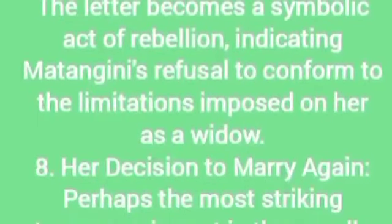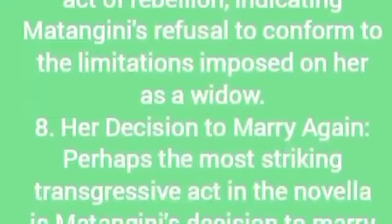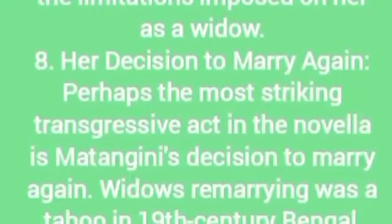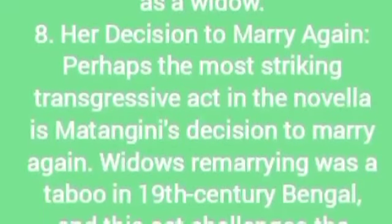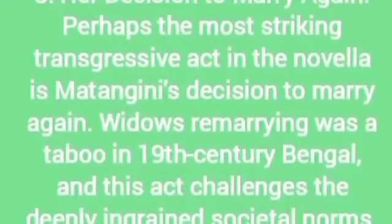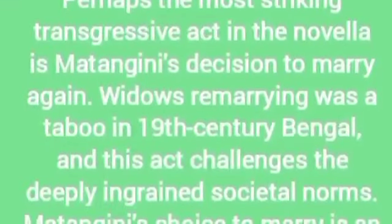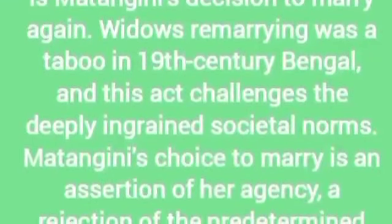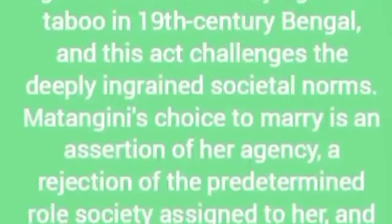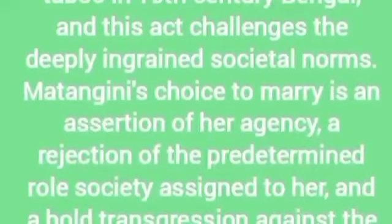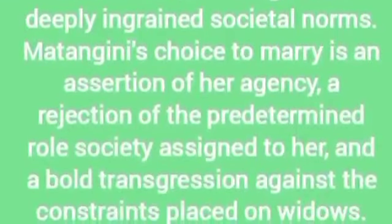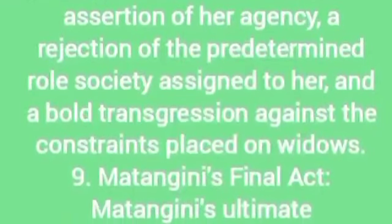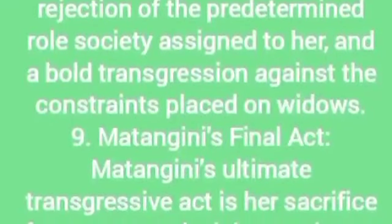Her Decision to Marry Again: Perhaps the most striking transgressive act in the novella is Matangini's decision to marry again. Widow remarriage was a taboo in 19th-century Bengal, and this act challenges the deeply ingrained societal norms. Matangini's choice to marry is an assertion of her agency, a rejection of the predetermined role society assigned to her, and a bold transgression against the constraints placed on widows.